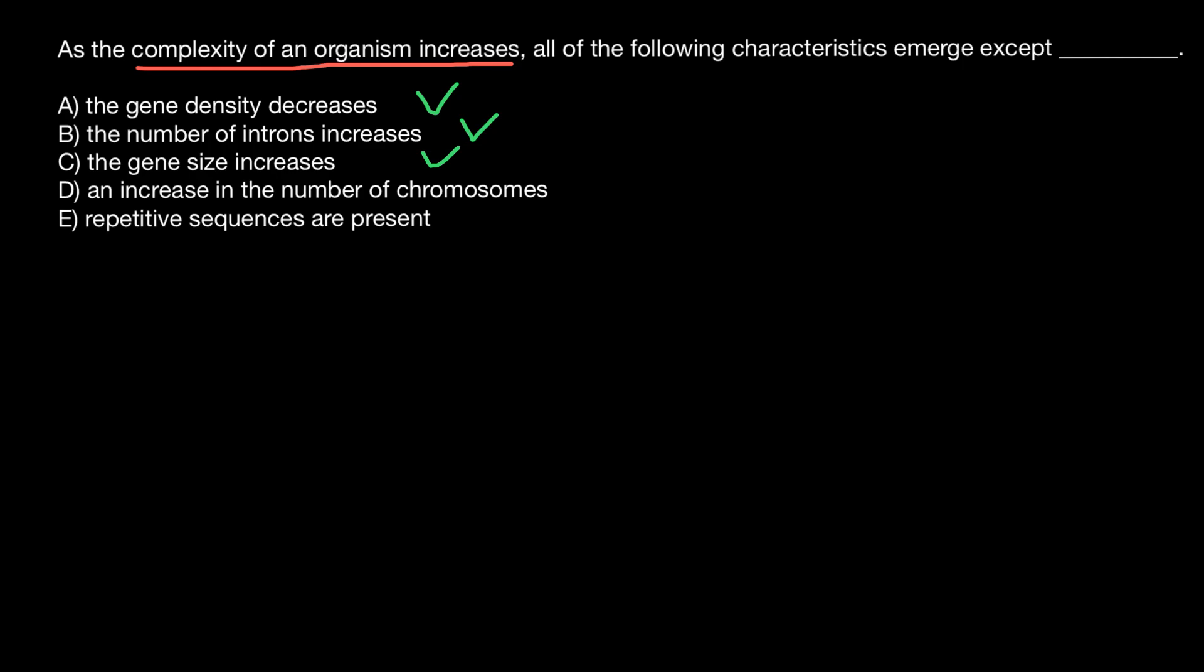Now we have these two answers left: an increase in the number of chromosomes, and repetitive sequences are present. The correct answer would be answer D. Answer E would be a true statement - repetitive sequences are present. For example, in the human genome, almost 50% of our genome is just repetitive sequences.